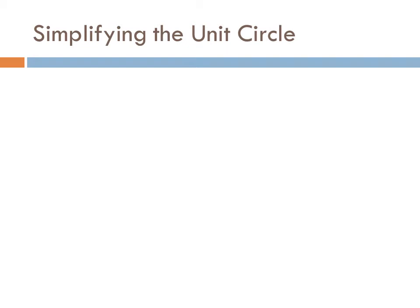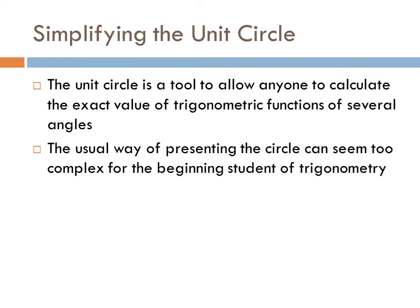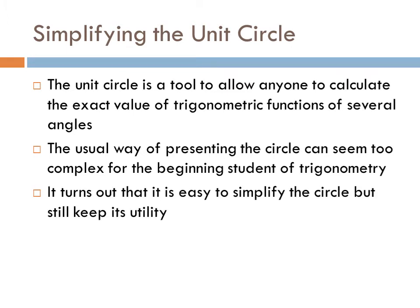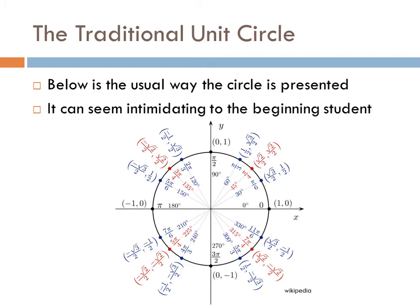Simplifying the Unit Circle — what is the Unit Circle? It is a tool that allows anyone to calculate the exact value of trigonometric functions of several angles. The usual way of presenting this circle might seem too complex for the beginning student of trigonometry. It turns out it is easy to simplify this circle but still keep its utility. If you understand how the circle is created, you can get by with just about a fourth of it.